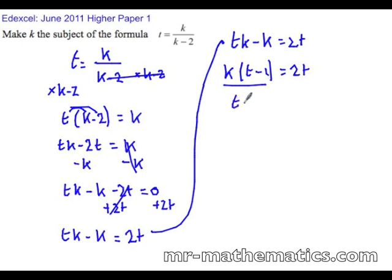And divide both by t minus 1. Then we cancel and we're left with k equals 2t over t minus 1.